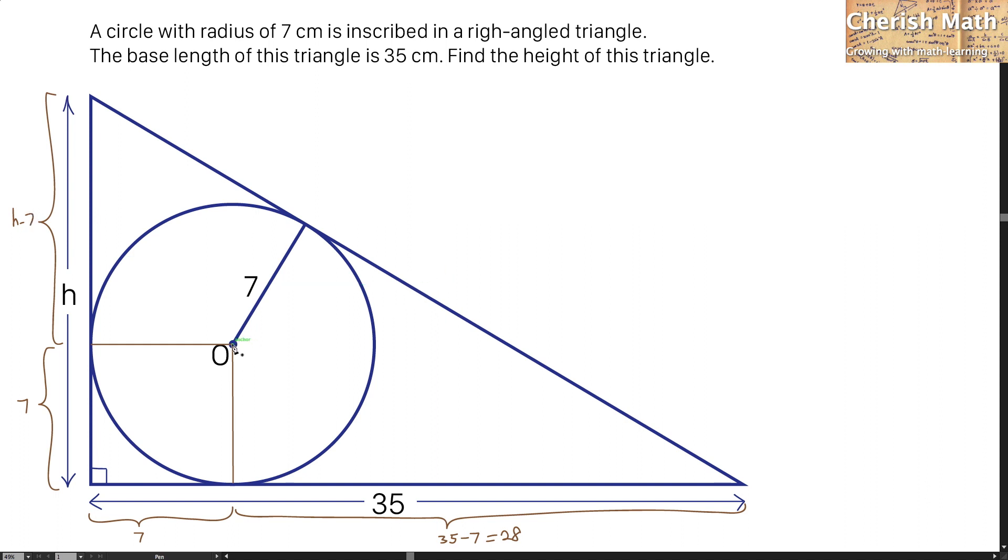I'm going to connect a line from the center of the circle to the corner of the triangle at the right-hand side, and I'm going to label here as A and here B.